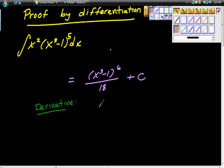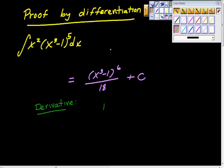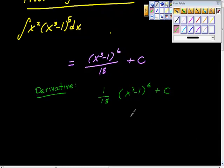Can I break this out as 1 over 18 as a constant multiplier, times x to the third minus 1 to the sixth power? Plus C, so far so good. Now what? Yeah, bring down the... right, I agree with you.